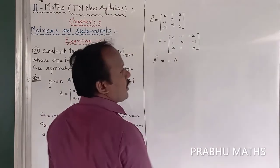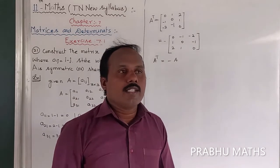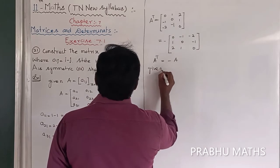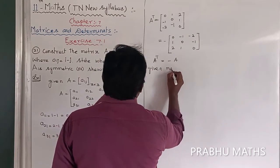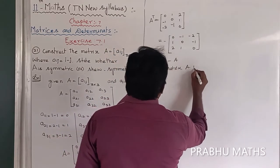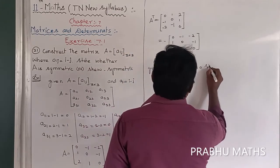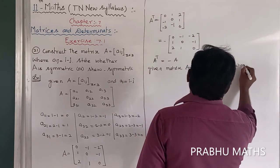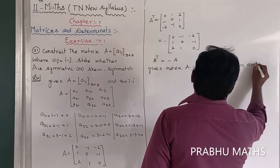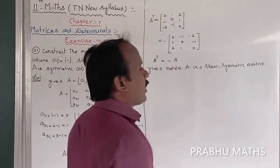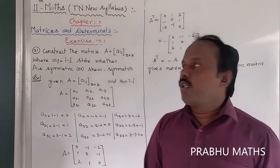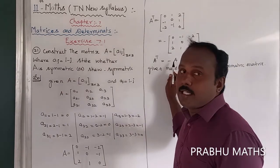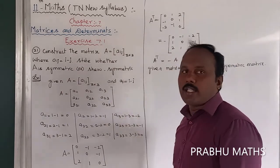A transpose equal to A is the condition for a symmetric matrix. Since A transpose equals minus A, the given matrix A is a skew symmetric matrix. Therefore, A transpose equal to minus A means it is called a skew symmetric matrix. That is our conclusion.